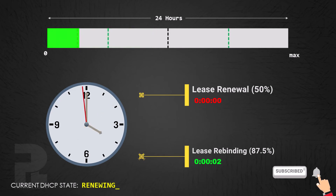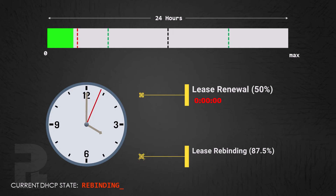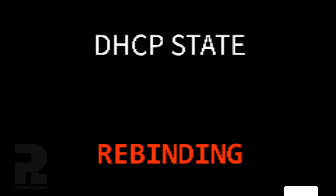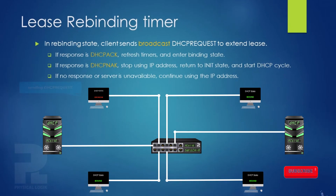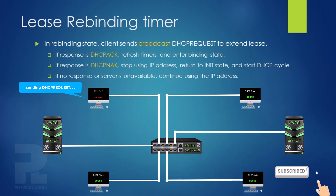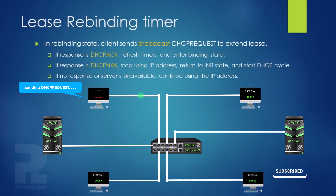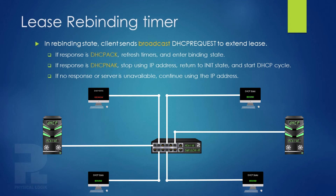This will cause the DHCP client to move from a renewing state to a rebinding state. In this state, it will no longer send unicast messages requesting lease extension. Instead, it will broadcast the DHCP request message on the local network segment requesting for lease extension. It will remain in this state until it receives a DHCP acknowledgement message, where it will reset its timers and enter the binding state with the DHCP server that acknowledged the request.